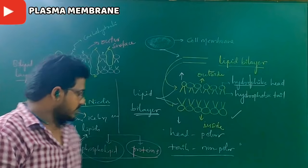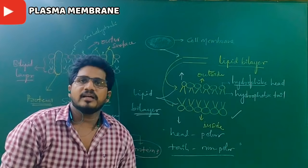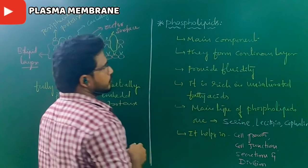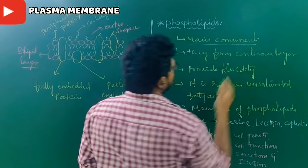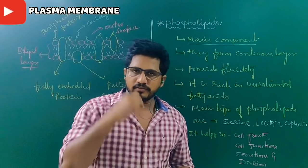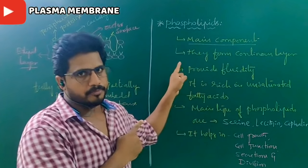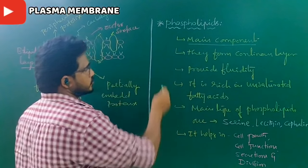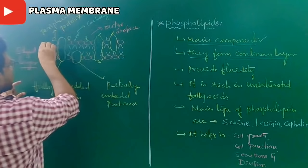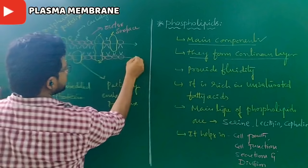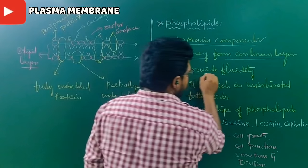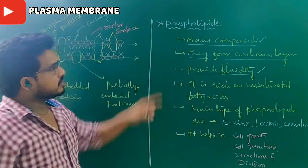Let us have clear details about the phospholipids and proteins in the Singer and Nicholson cell membrane model. Phospholipids are the main components because they form continuous layers. In between the phospholipids, proteins are arranged. Phospholipids provide fluidity to the cell membrane — that is why in the analogy, the sugar solution represents phospholipids, which give fluidity. It is rich in unsaturated fatty acids, and because of the presence of unsaturated fatty acids, it gets fluidity.